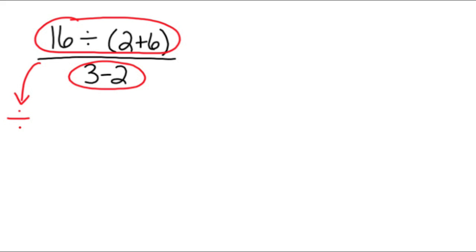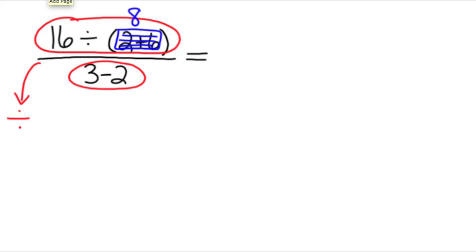For this one, the way we show our work is we're actually going to go side to side. So for the numerator, we have 16 divided by 2 plus 6. Within that expression, the first thing we would do is look at the parentheses. Put a box around 2 plus 6. Now, 2 plus 6 is 8, so we can write 8 there. Then we're done with the 2 plus 6, so we're going to copy down what we have in the numerator. On the top we have 16 divided by 8.